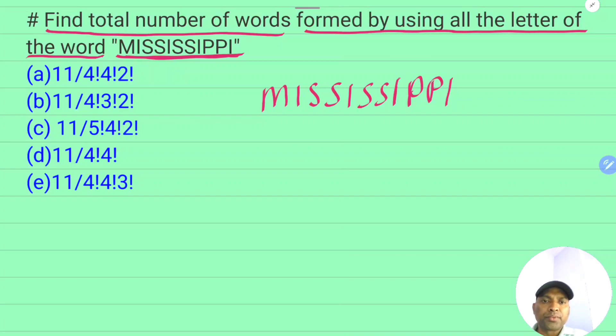To solve this, count the total letters: 1, 2, 3, 4, 5, 6, 7, 8, 9, 10, 11. Total letters are 11, so the arrangement would be 11 factorial. But this is an arrangement of alike objects, meaning some objects are the same and repeat more than one time.